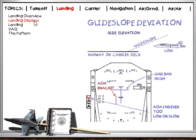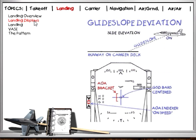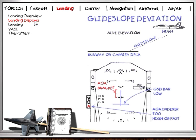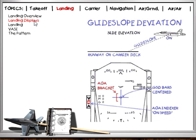If the approach is too slow, the upper chevron of the AOA indexer will light. The chevron indicates the direction your nose and the angle of attack must go to be on speed. To correct, increase your power until airspeed starts to increase. As on-speed angle of attack approaches, the center ball will light. If airspeed starts to build, the angle of attack indexer will indicate that you are fast by lighting the lower chevron. Reduce power until the airspeed begins to decrease. As the center ball lights, add power to catch the airspeed decrease and maintain on-speed flight.